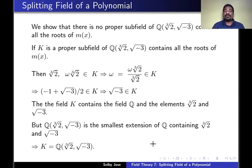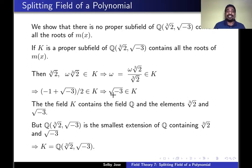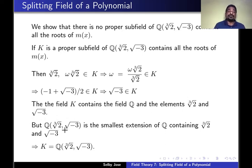Suppose k is a proper subfield of Q(∛2, √(-3)) and contains all the roots of m(x). Then ∛2 and omega·∛2 are in k. Therefore omega·∛2 divided by ∛2, which is also in k, means omega is in k. This means (-1 + √(-3))/2 belongs to k, which means √(-3) is in k, since -1 and 2 are in k because Q is contained in k. Therefore k contains Q and the elements ∛2 and √(-3). But Q(∛2, √(-3)) is the smallest extension of Q containing ∛2 and √(-3), so k and Q(∛2, √(-3)) are the same.